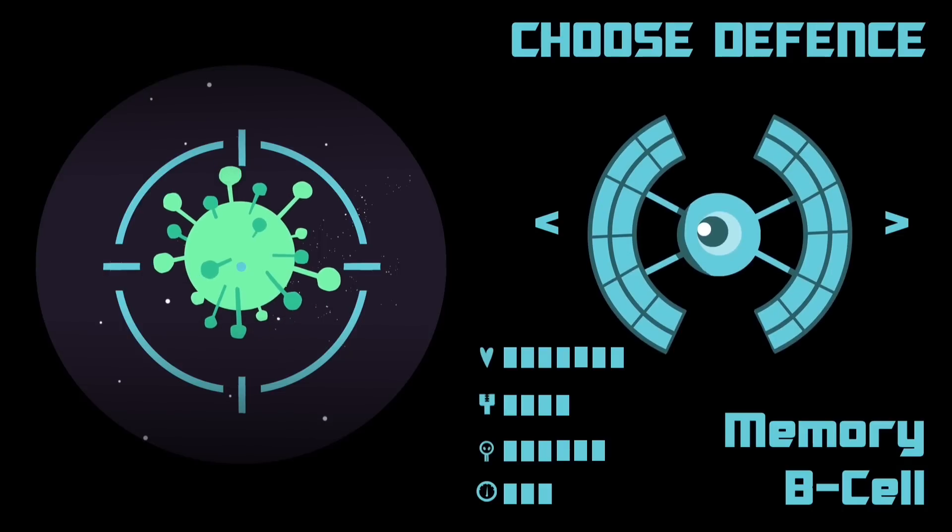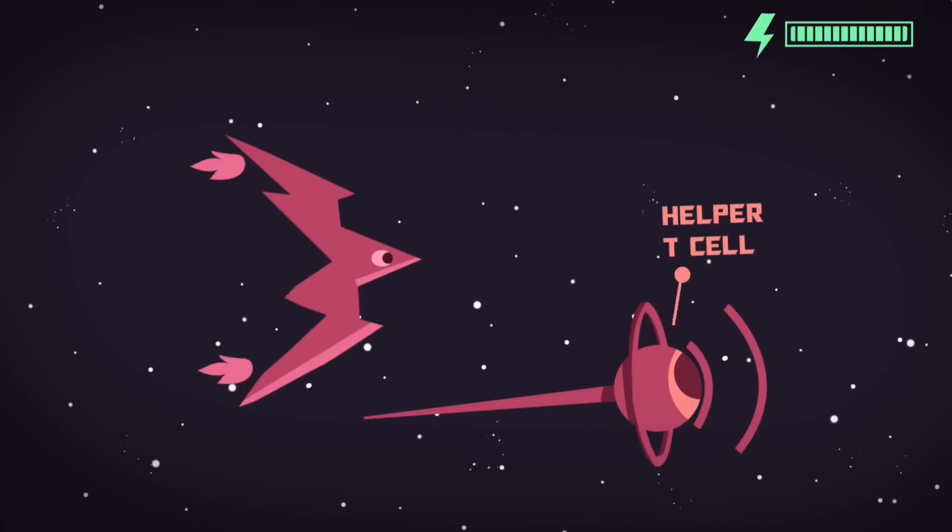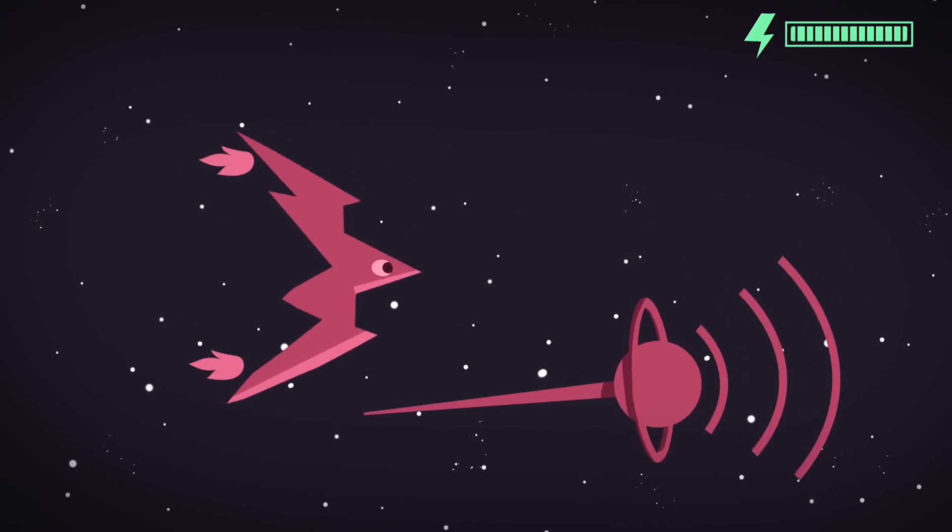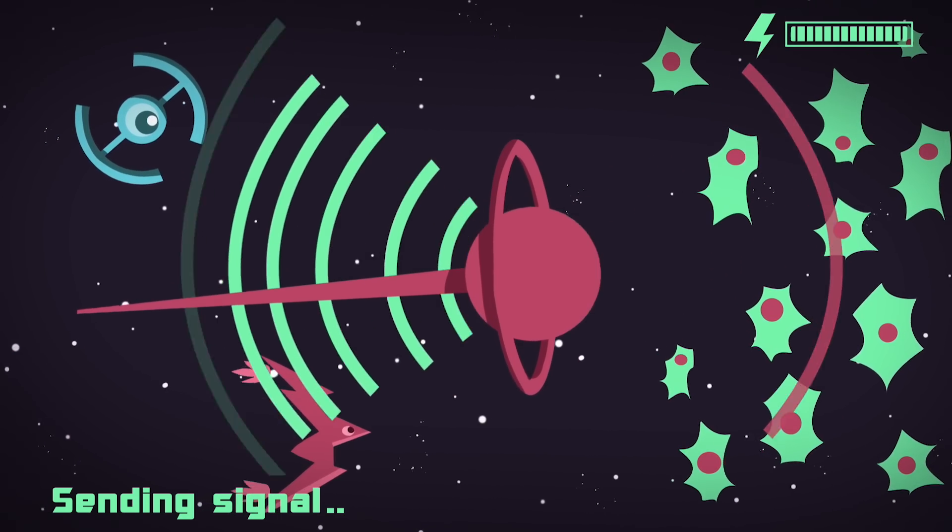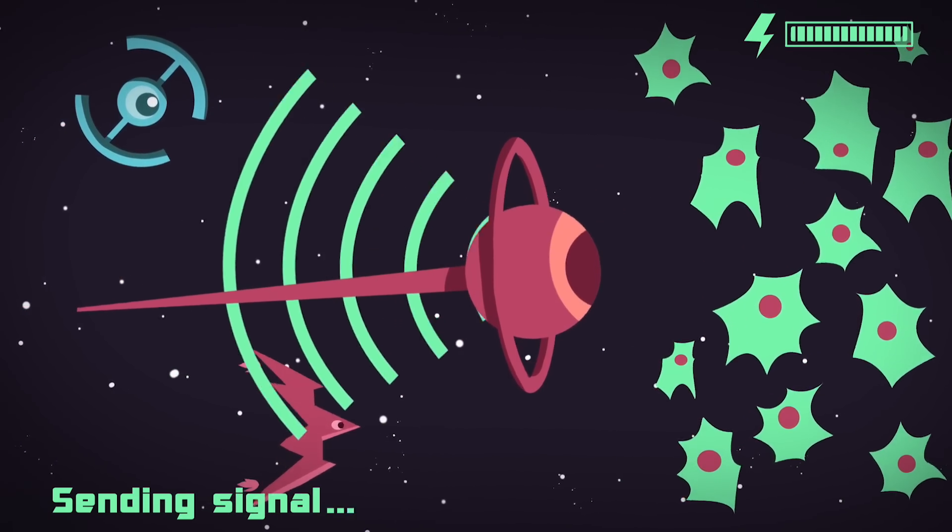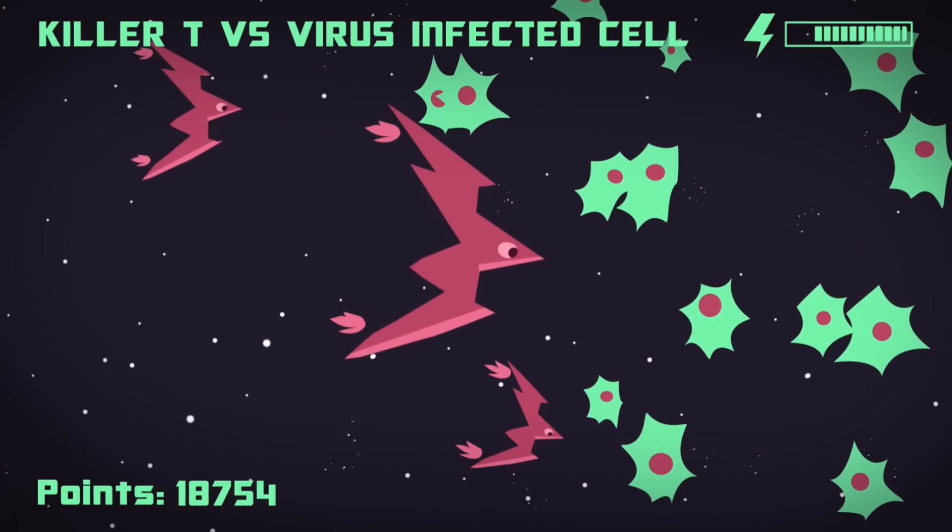T cells can be of the helper or killer kind. Helper ones provide signals, guiding the way for both B cells and other T cells, while killer ones, once activated, destroy infected or cancerous cells.